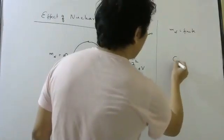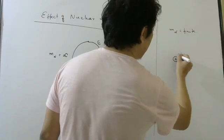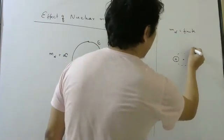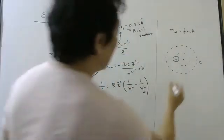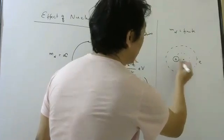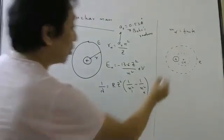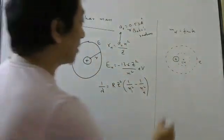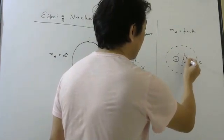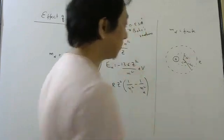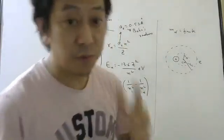then you cannot say nucleus is at rest. So then what will happen? Nucleus will rotate around its center of mass. And electron will also rotate around their center of mass. So this is the center of mass of nucleus and electron. Obviously, it will be very close to nucleus. So nucleus also will move in a circle with some radius R1, R nucleus and electron will go in R electron. Okay. So this is called two-body problem.